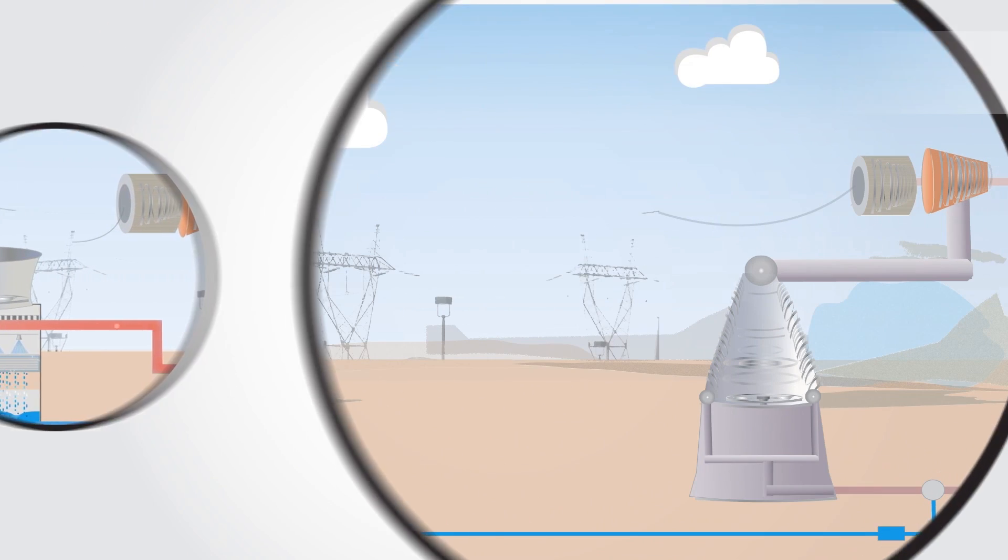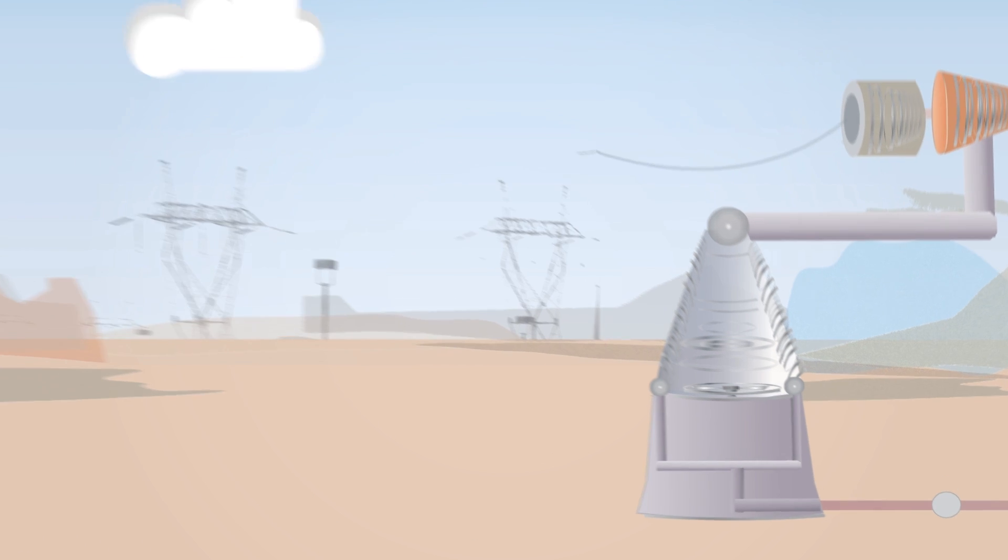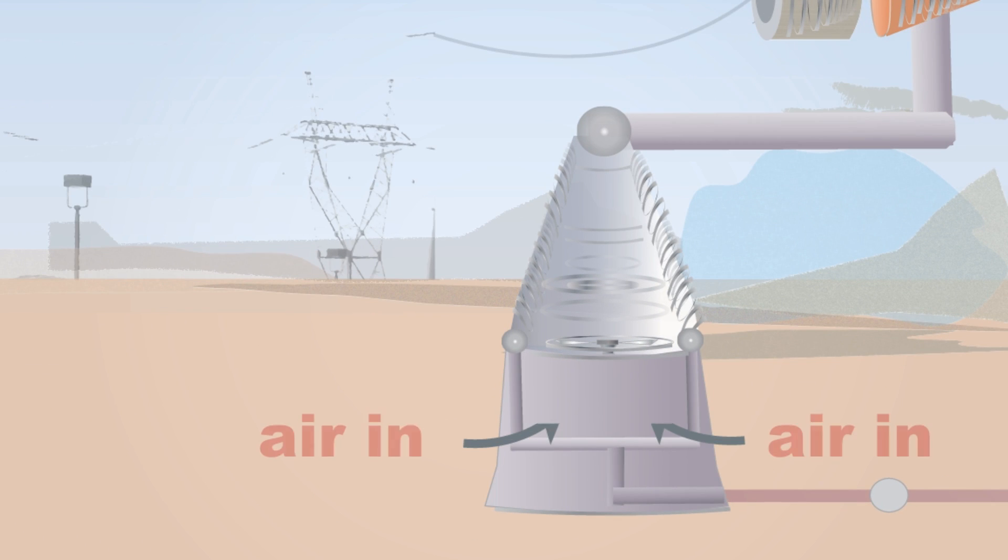The third option is a dry cooling system, which requires no cooling water but instead relies on air for cooling. Fans in the condenser create a considerable amount of airflow to cool the steam.